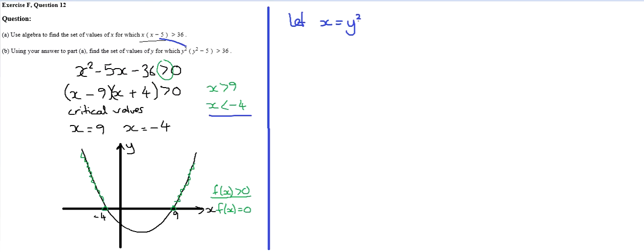So if x is equal to y squared, that means therefore y squared must be more than 9, and y squared must be less than negative 4.